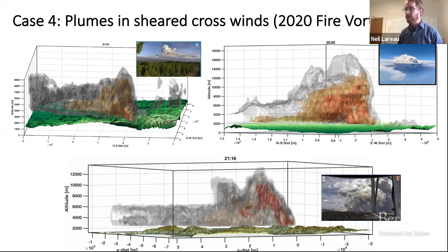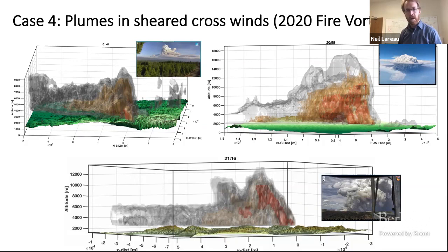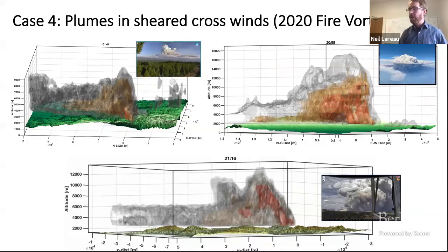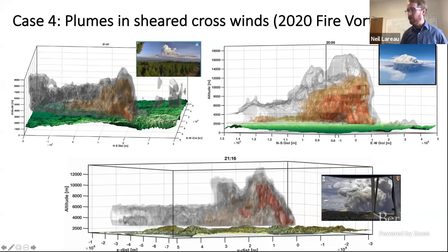I'm going to talk about three cases from this summer — all preliminary analyses. On the top left, the Bear Fire, part of the North Complex that ran down toward Lake Oroville. On the top right, the Creek Fire burning in the San Joaquin River Valley. And on the bottom, the Loyalton Fire, near the California-Nevada border near the town of Loyalton. All three plumes are characterized by deep injection into the atmosphere — the Creek Fire produced injections up to almost 16 kilometers or above — capped by large pyrocumulonimbus clouds, and all feature a significant crosswind component contributing to the development of a sequence of anticyclonic vortices.